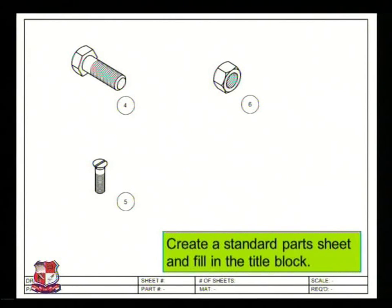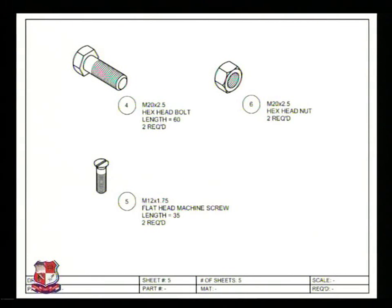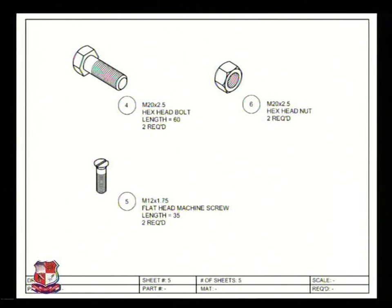Now the fourth component, fifth and sixth - the fourth component is the bolt, the fifth one is a screw, the sixth one is a nut. Create a standard parts sheet and fill in the title block. As these are standard parts, they should be written at the last. The specifications are written over here - no need to draw the views, just write the specifications, as these parts are standard parts.